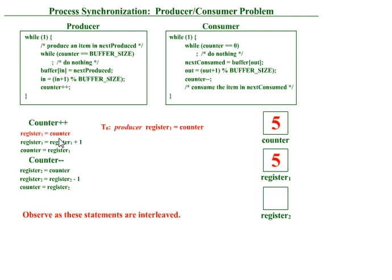This instruction is executed. What this instruction will do is read the value of counter variable and store it in register1. The value is 5, so it stores 5 in register1.